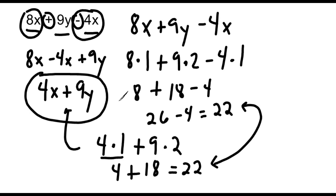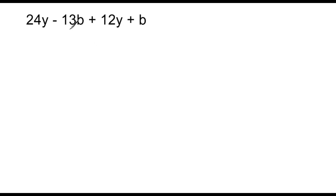Let's do another example. This expression has four terms. We have 24y and plus 12y, so if we combine those two terms, 24y plus 12y is 36y.